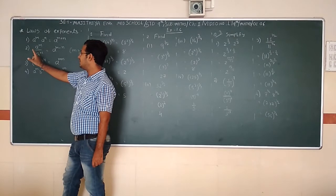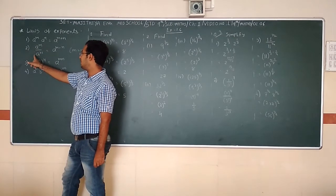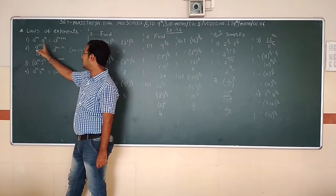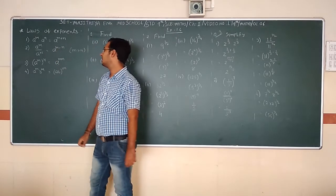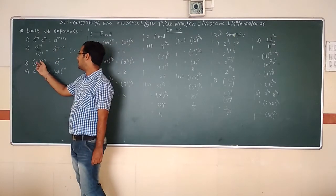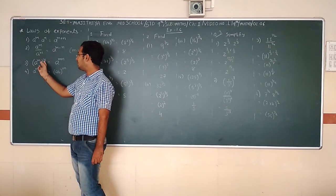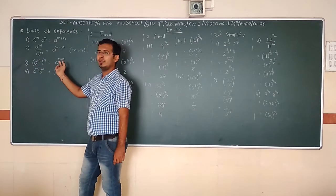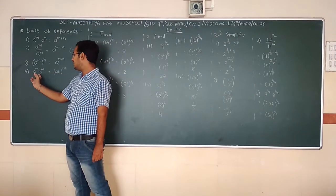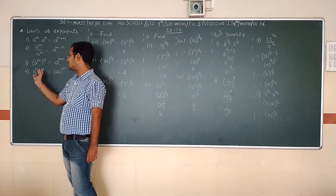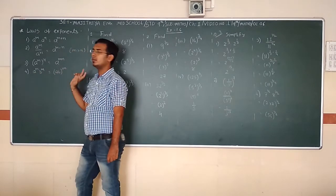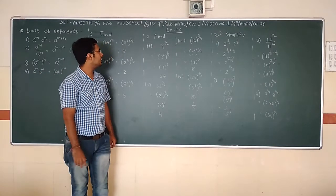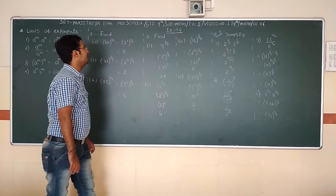If it is in division form and base is same, then in exponent there is subtraction. Third, (a^m)^n - power of power, then multiply the powers. Fourth, if the base is different but power is same, then combine bases with common power. Now start exercise 1.6.